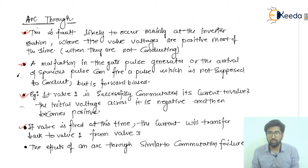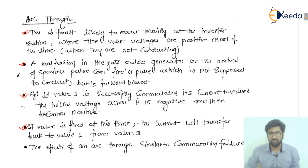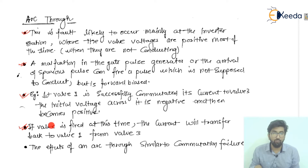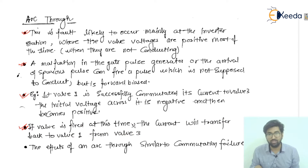If the valve is fired during this time — when commutation is occurring from valve 1 to valve 3 and the voltage is transitioning from negative to positive — then the current will transfer back to valve number 1 from valve number 3. That is actually commutation failure.